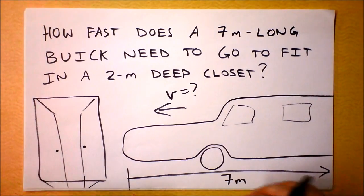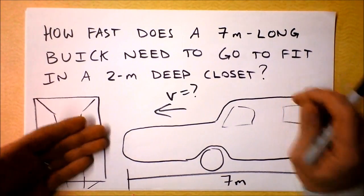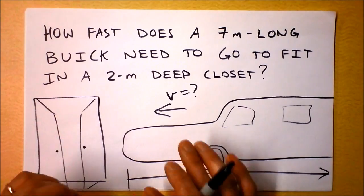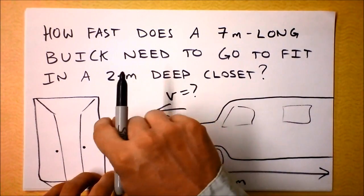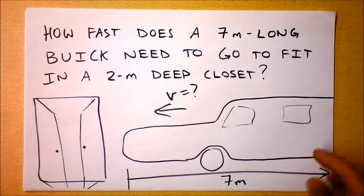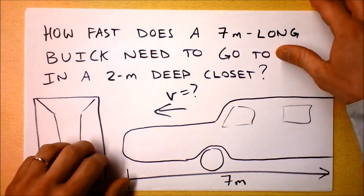And if you were really fast, don't talk to me about relativistically fast, but if you were really fast, you could close the doors, and the Buick would not yet have hit the back of the two meter deep closet. Because the Buick is shorter as seen by the people standing near the closet. We can talk about why later, but right now you need to trust me that this is real.